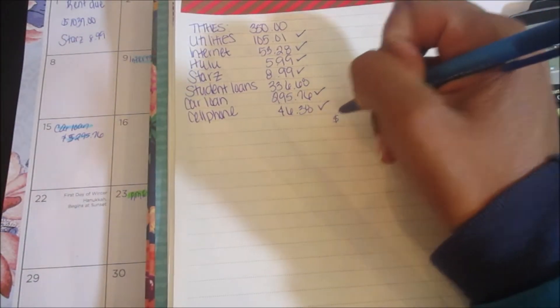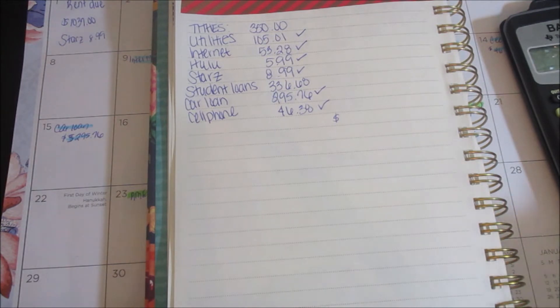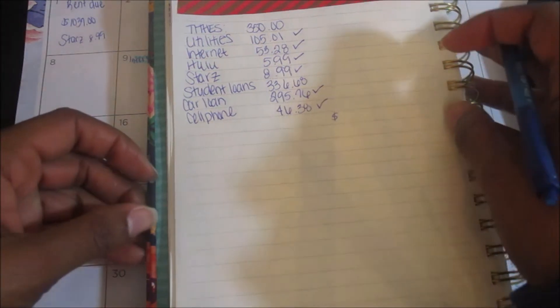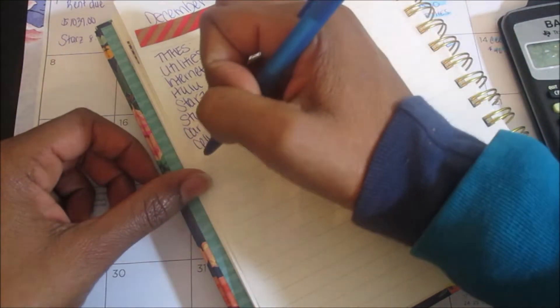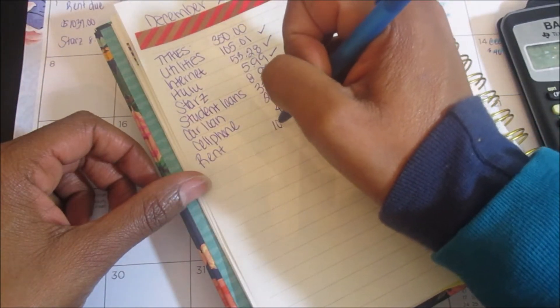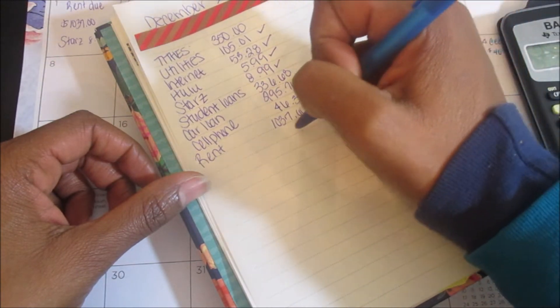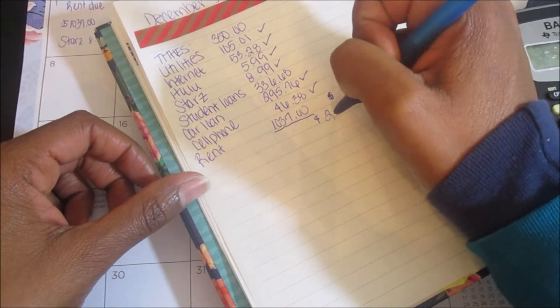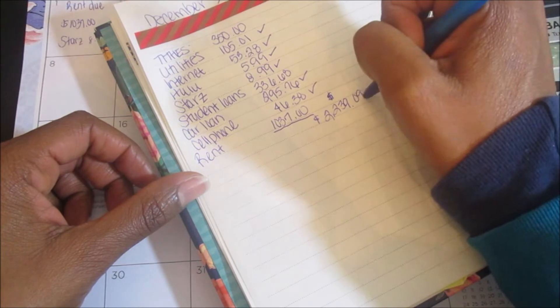Those are my expenses for the month. I'm going to total that up over here. I forgot to add my rent on here so let me add that in too although it's already been paid as well. So my total expenses are $2,239.09.